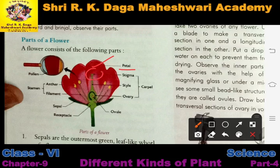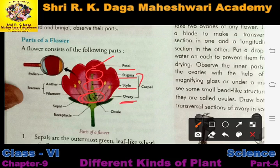This green part visible here is called the stigma. Below the stigma is the style. And this part of the flower is called the ovary. Stigma, style, and ovary together are given a common name — that is called the carpel. And inside the ovary, this small part is called the ovule.